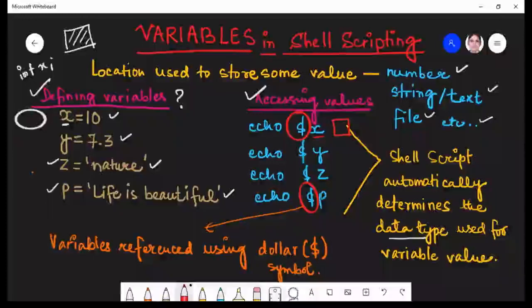If you don't write this, it is simply going to display X. If you don't use the dollar symbol before the variable name, it will simply print X. But when you put this dollar symbol, it is going to fetch the value. So here it will be returning 10.